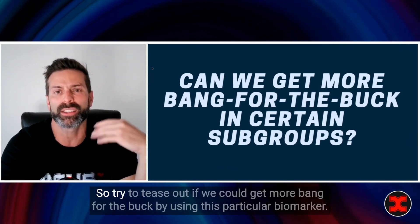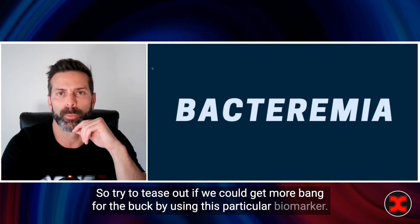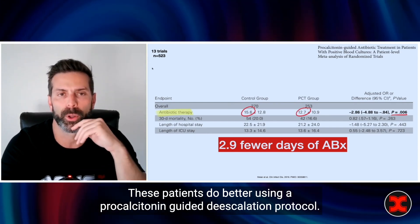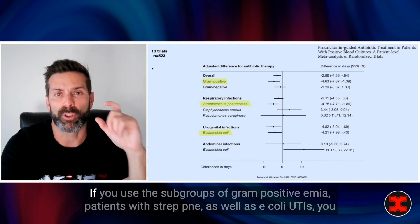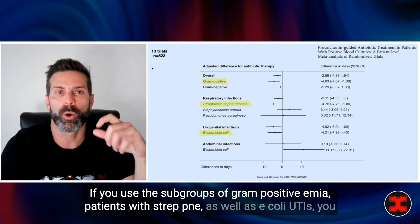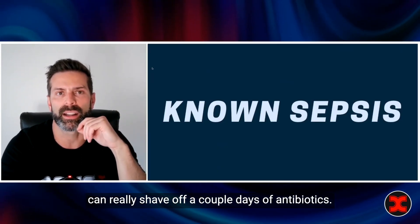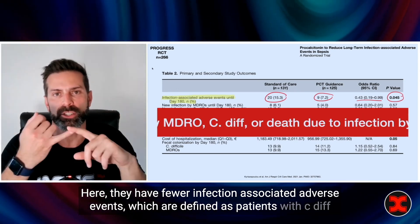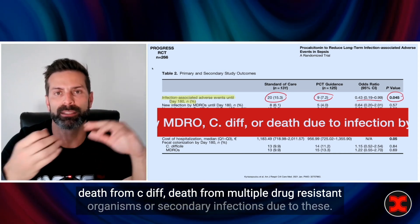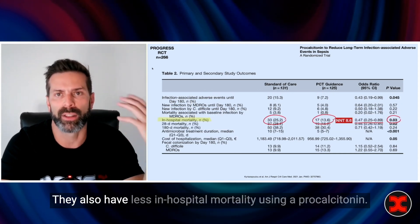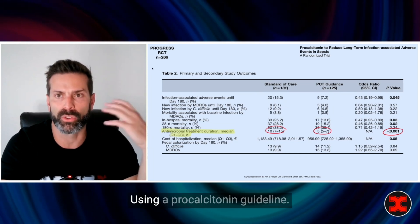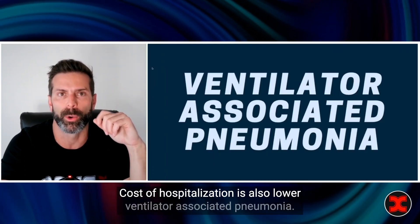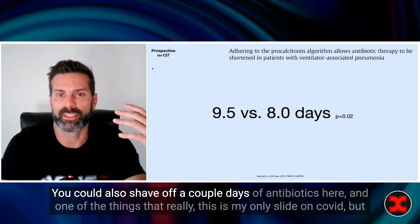Let's look at some quick subgroups to see if we can get more bang for the buck with this biomarker. Patients with bacteremia do better using a procalcitonin-guided de-escalation protocol — 2.9 fewer days of antibiotics. In subgroups of gram-positive bacteremia, strep pneumo, and E. coli UTIs, you can really shave off a couple days of antibiotics. Patients with known sepsis have fewer infection-associated adverse events — defined as C. diff, death from C. diff, death from drug-resistant organisms, or secondary infections — as well as less in-hospital mortality, fewer median days of antibiotics, and lower cost of hospitalization using a procalcitonin guideline. Ventilator-associated pneumonia patients can also have a couple days of antibiotics shaved off.